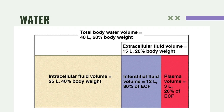Our total body water volume is about 40 liters, or around 60% of our body weight. There are two compartments where water can be found: intracellular — meaning inside your cells — and extracellular, meaning outside your cells.